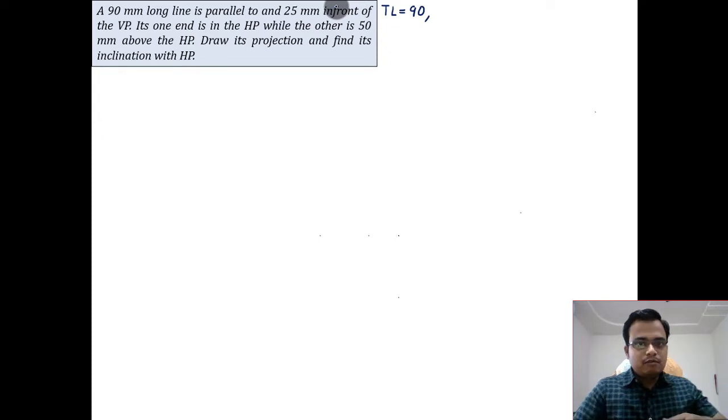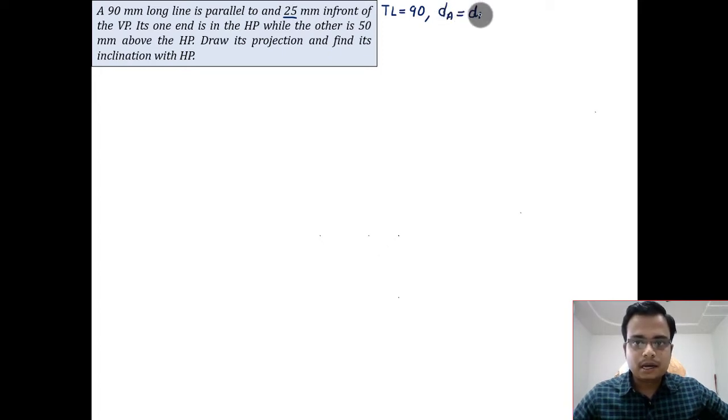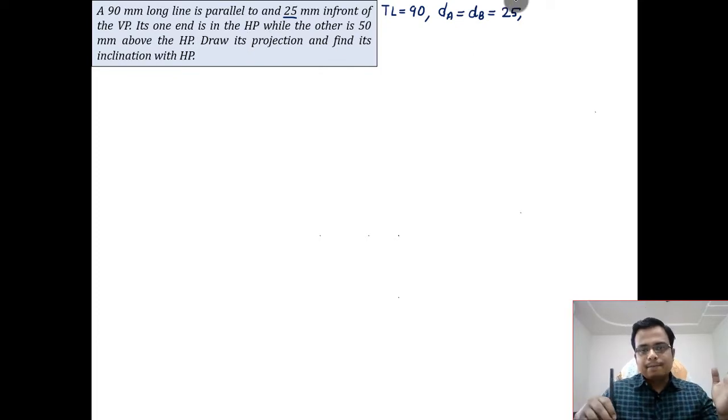So da, let me write this property: will be equal to db and will be equal to 25. Its one end is in the HP, so if the end is in the HP, that means its distance from HP is 0. That's pretty simple, so ha will be equal to 0.